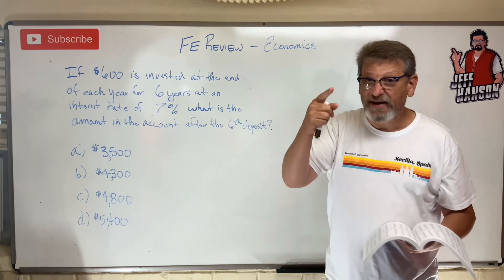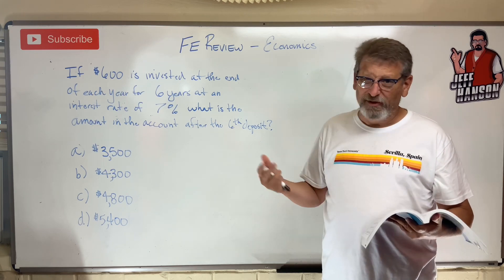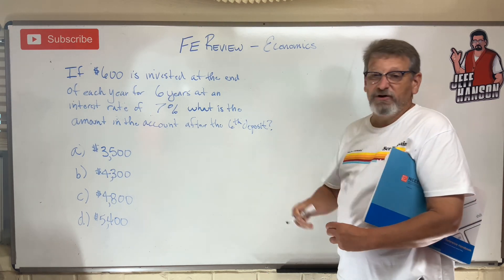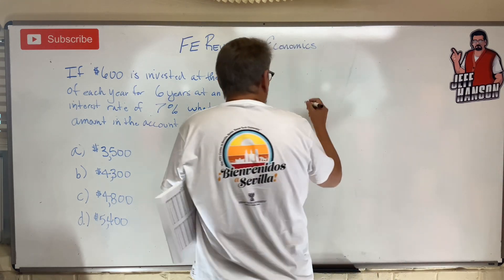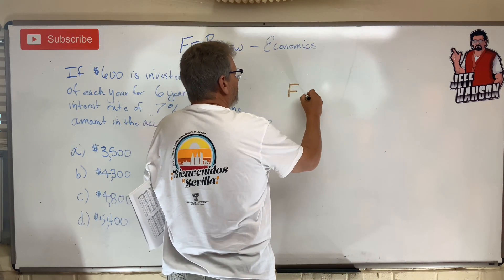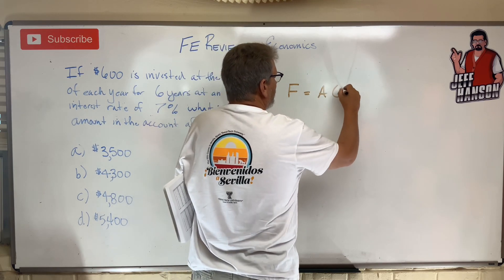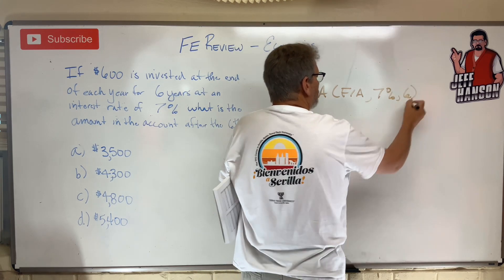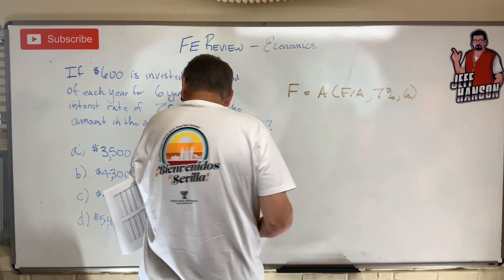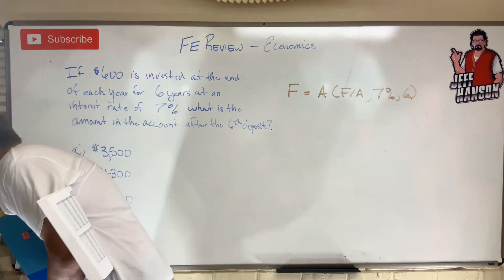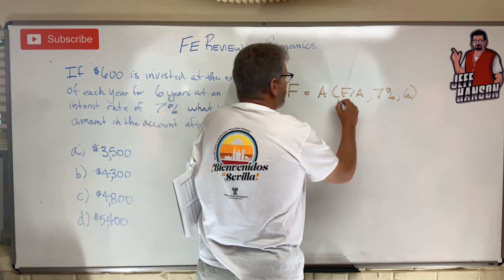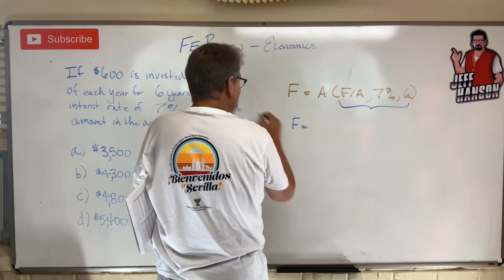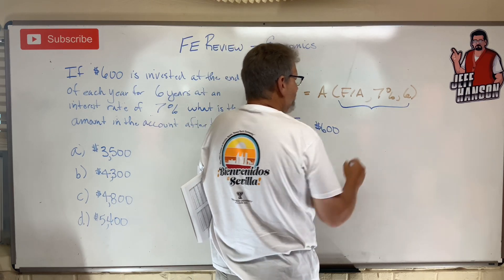Because we can solve this one of two ways — we can use the table or we can use the equation. Let's use the table and just interpolate. Here's what we need: first we need our factor. We have $600 invested every year — that sounds like an A. So we want to know: F equals A times (F given A, 7%, 6 years). That's our factor. F is what we're looking for, and A is 600.